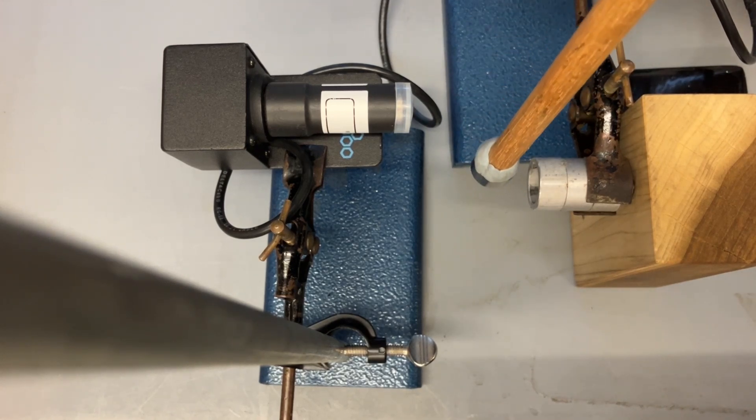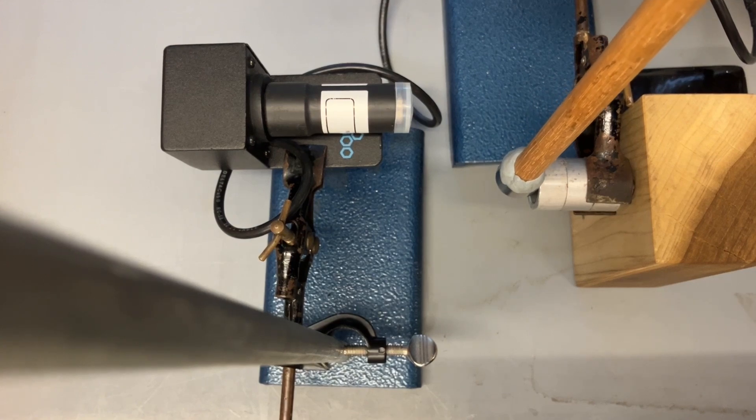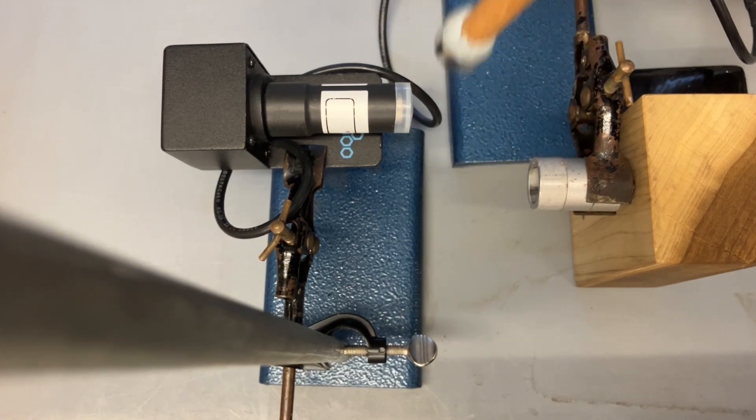You can make this a little bit more quantitative by measuring the count rate with and without the magnet being present.